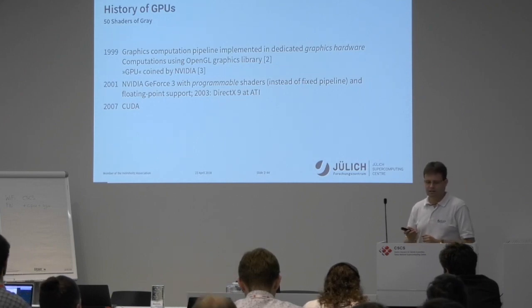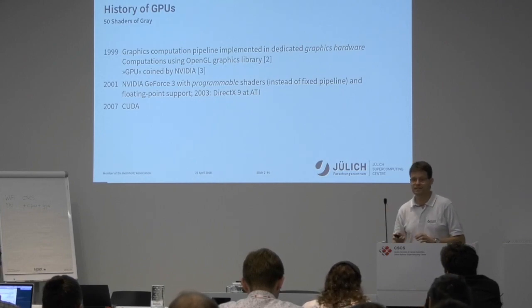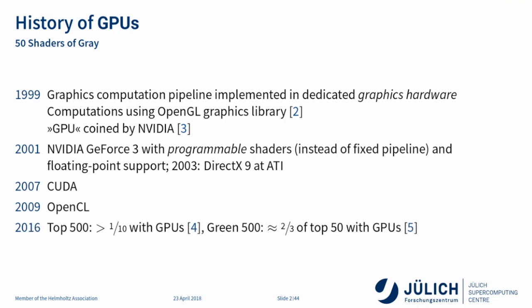CUDA's programming model breaks tasks down into threads that are as small as possible and schedules them efficiently. Since CUDA was very NVIDIA-specific, in 2009 there was OpenCL — an open standard whose kernel language is actually very similar to CUDA, but covering not just GPUs but pretty much all processors. We have the fastest computer in Europe here, and it's fast because it uses GPUs.